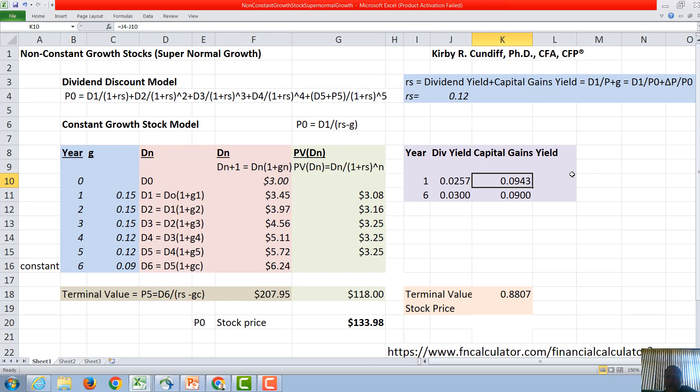In the final year when our stock becomes a constant growth, then the capital gains yield has to equal g, the constant growth rate. That is only the case for a constant growth stock. So the general equation is the dividend yield equals next year's dividend over the stock price plus the change in the stock price over the initial stock price, and this change in the stock price over the initial stock price only becomes g when you have a constant growth stock.